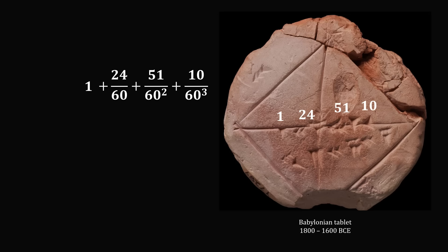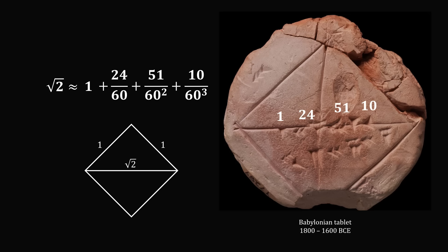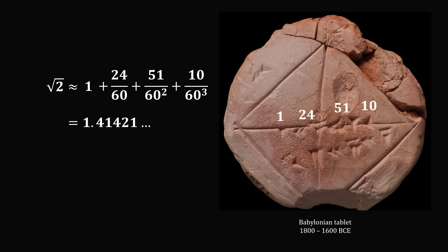Notice that these numbers are written along the diagonal of a square. Think about a square which has a side length equal to 1 — what's the length of the diagonal? Even the Babylonians knew this was equal to the square root of 2. So this particular number was an approximation for the square root of 2. Converting the Babylonian numbers into a modern decimal number, we end up with the approximation that the square root of 2 is equal to 1.41421. These are all accurate digits — so the Babylonians were correct to five decimal places.